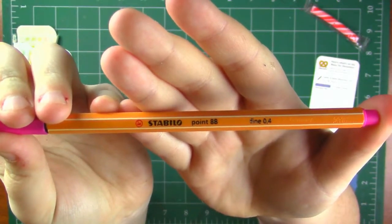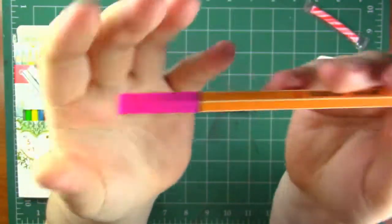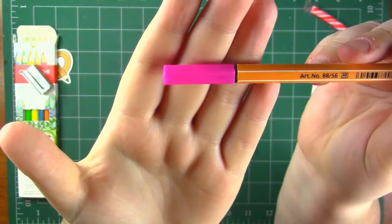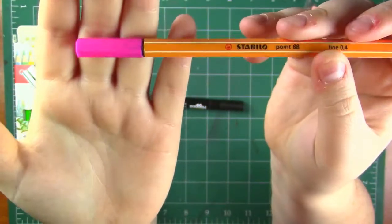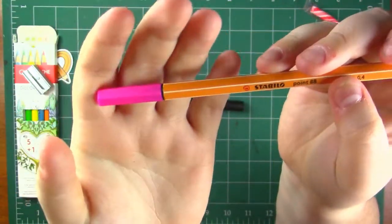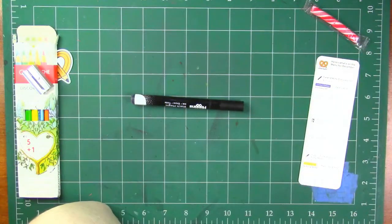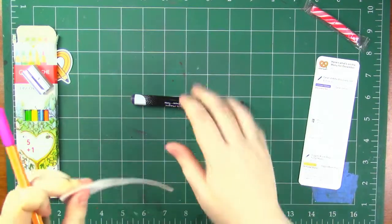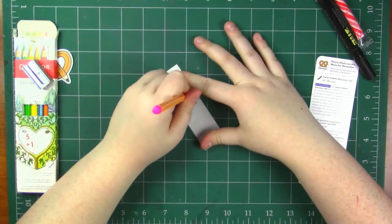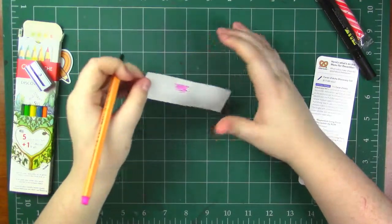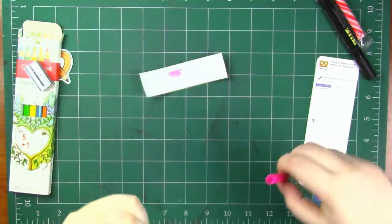First up we've got a Stabilo 0.88 fine, it's a 0.4 in what looks to be like this mauvey pinkish magenta-y color. Those are completely different, they're all different, why? I've got this scrap piece of paper lying around, I'm going to color on it. Okay so it's basically the color of the cap.